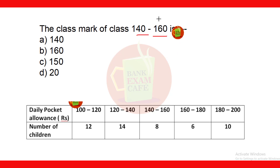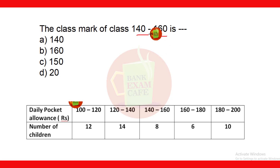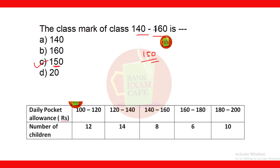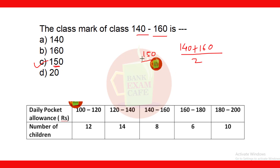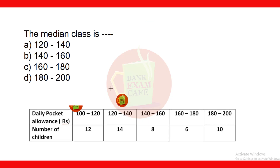The class mark means the midpoint of the class interval. For 140 to 160, the class mark is 150. You can find it orally — the middle number is 150. Or use the formula: (140 + 160) ÷ 2 = 150. So the class mark of class 140 to 160 is 150, and option C is the correct answer.